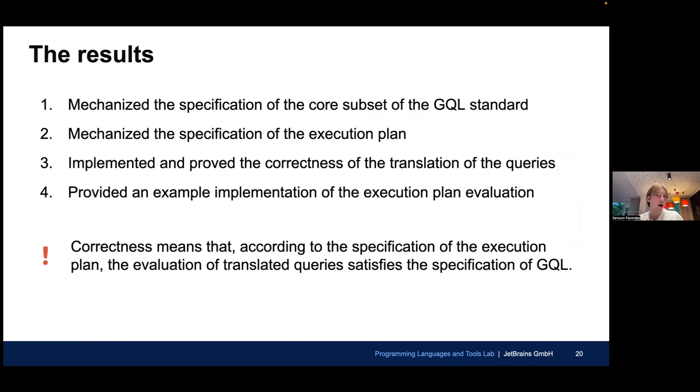So, the results. We have mechanized the specification of the core subset, which we have chosen ourselves. We have mechanized the specification of the execution plan, including all the preparations that are enough to evaluate our queries. We have implemented and proved the correctness of the translation of the queries. In this case, as we have already discussed, correctness means that according to the specification of the execution plan, the evaluation of translated queries satisfies the specification of GQL. And we have provided an example of implementation of the execution plan evaluation, including the operation which uses matrices.